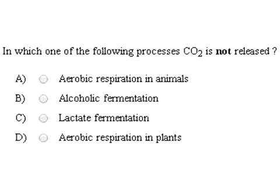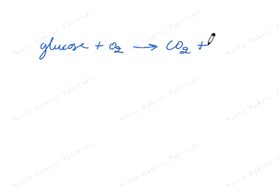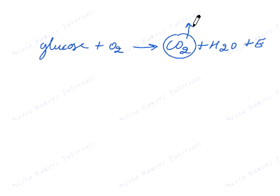The question asks about the process in which carbon dioxide is not released. Let us take the first process: aerobic respiration in animals. Aerobic respiration is the breakdown of glucose in the presence of molecular oxygen. In this breakdown, we get carbon dioxide, water, and energy — meaning carbon dioxide is given out in this process.